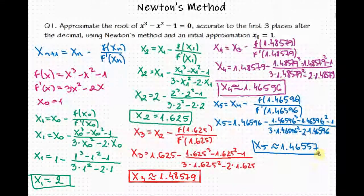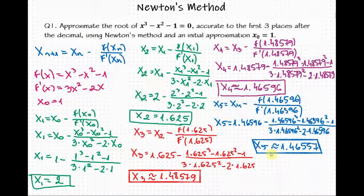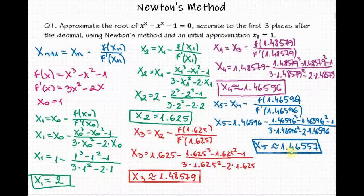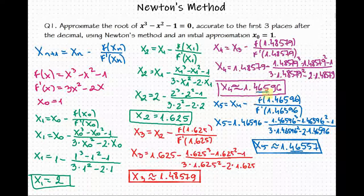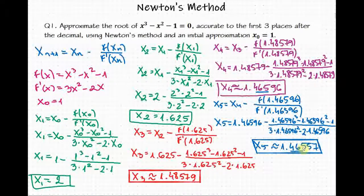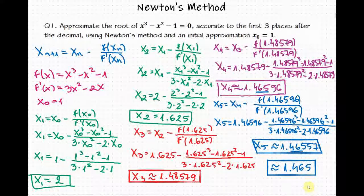For the fifth approximation we get a value of approximately 1.46557. Let's now compare x sub 4 and x sub 5. After five iterations of Newton's method, we found a root accurate to the first three places after the decimal — here is our stopping point. For x sub 4 we have 1.46596 and for x sub 5 we have 1.46557. The first three decimal digits agree, so our final approximation is 1.465. I hope this gave you a better understanding of Newton's method of finding the roots of a function. Thanks for watching.